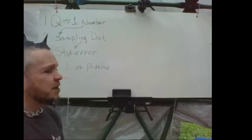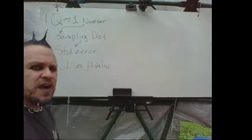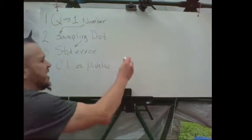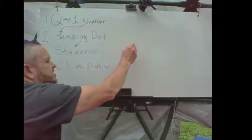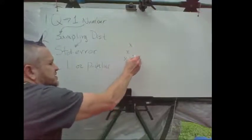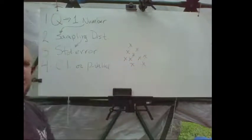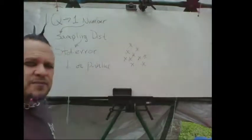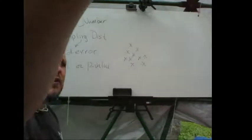Let's talk about the single sample t-test. With a single sample t-test, you have a bunch of individuals and they each get something measured — let's call it X. So, let's say a bunch of people each have a body temperature.